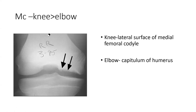The most common location of osteochondritis dissecans is the knee joint. You should remember this area — it is the medial joint area. Specifically, the lateral part of the medial condyle is the most common area. So in the knee joint, the lateral surface of the medial condyle is the most common location. The other area is the elbow.